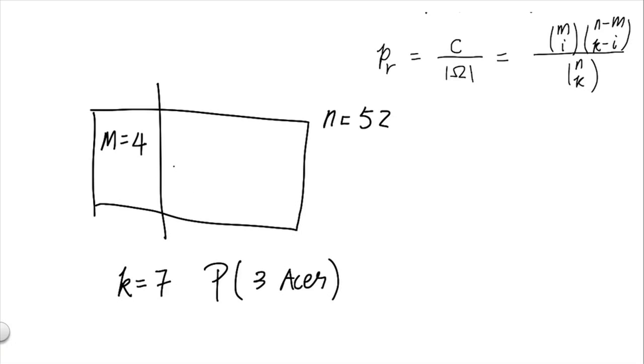Using the notation we did earlier, if we were to draw a circle representing the 7 cards, we want to know what is the probability that we have 3 aces in the left side of the box, and 4 non-aces for the remainder of the deck. In particular, we'll call i equal to 3.